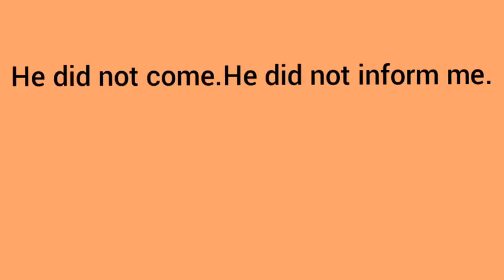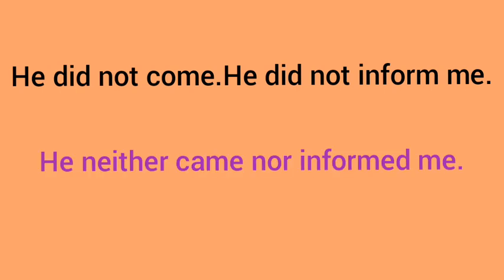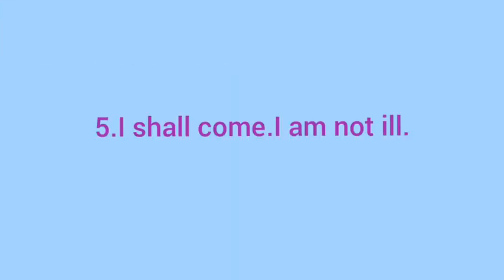So now we will see the next pair of sentences: He did not come. He did not inform me. Here you will use 'neither...nor'. He neither came nor informed me. Here we have two conjunctions — 'neither...nor' — which we call correlative conjunctions, used in pairs.